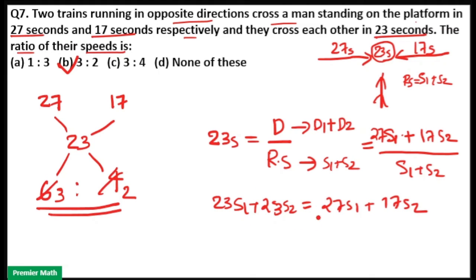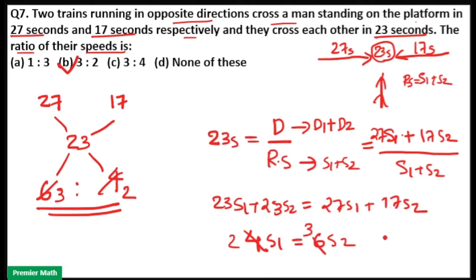Rearranging: 27S1 minus 23S1 equals 4S1, and 23S2 minus 17S2 equals 6S2. So 4S1 equals 6S2, giving the same ratio: S1 divided by S2 equals 6 divided by 4, which simplifies to 3 is to 2. Option B is your answer. Either method works, but the allegation method is easier.